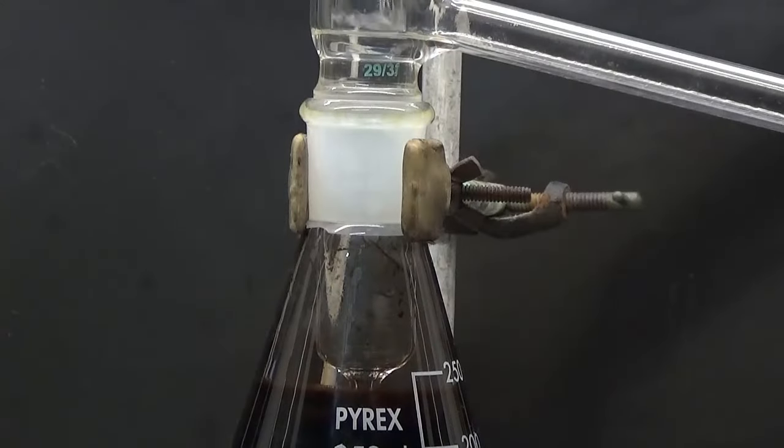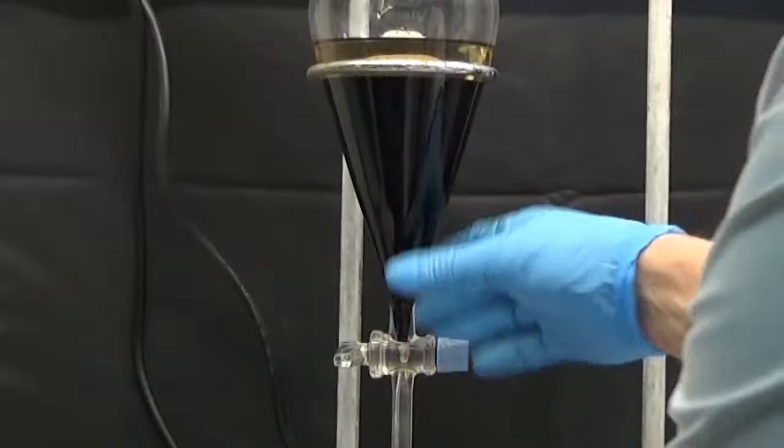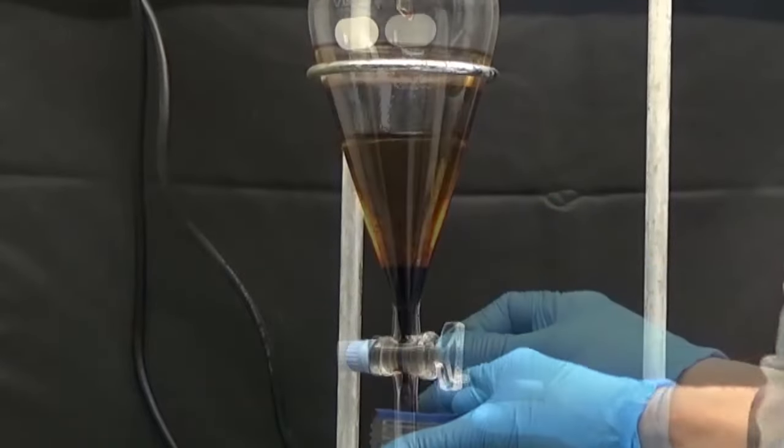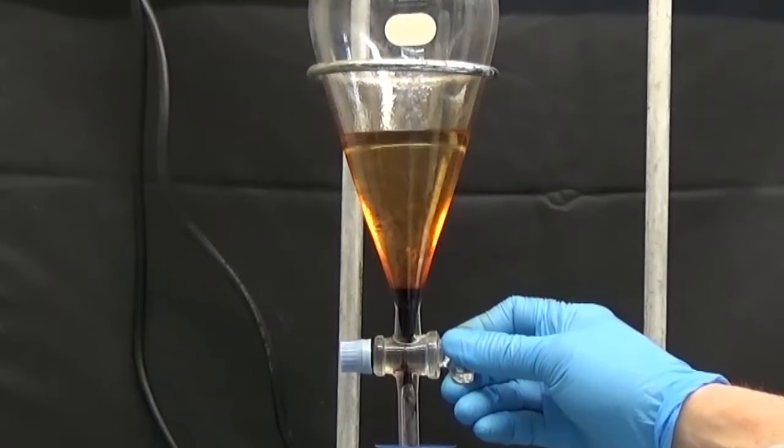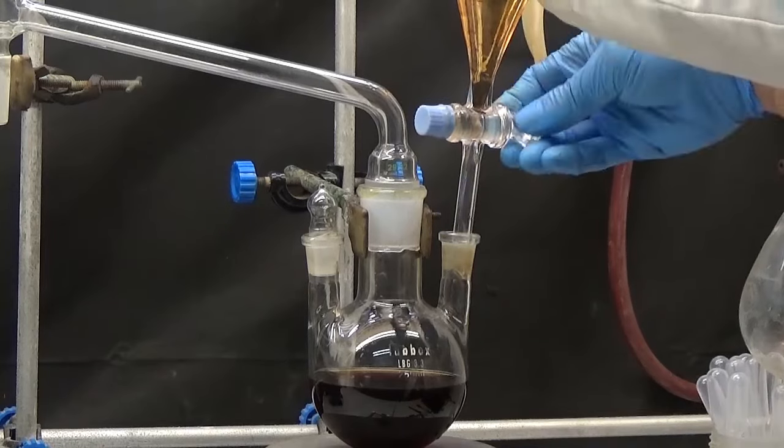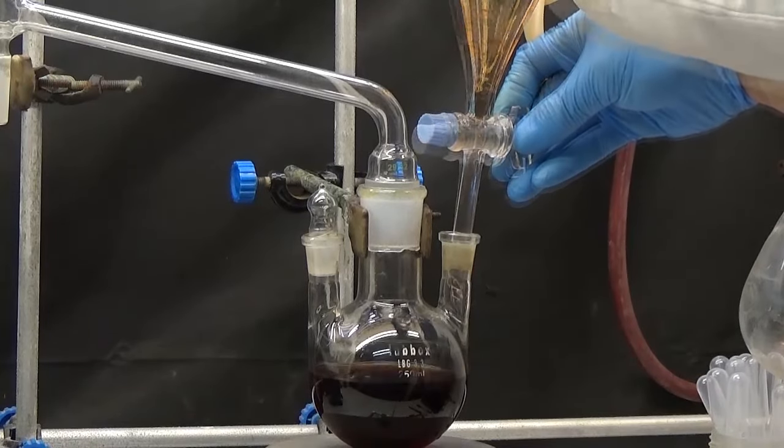The operation is complete when the ether is completely clear. All the product of the Erlenmeyer flask is placed in a separatory funnel and the organic phase is separated. The organic phase is added to the one of the evaporation balloon and a thermometer is fixed.